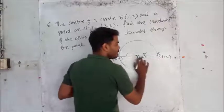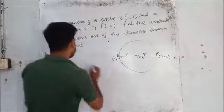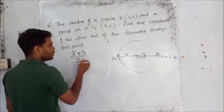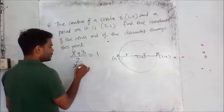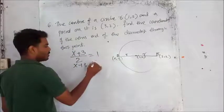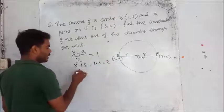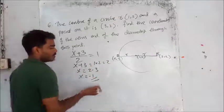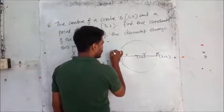It was (1,2). x plus 3 divided by 2 is equal to 1, x plus 3 is equal to 2, x is equal to 2 minus 3, x is equal to minus 1. So x is equal to minus 1.